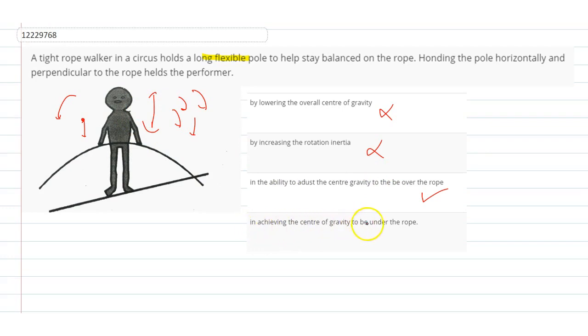So this option is correct, in achieving the center of gravity to be under the rope. Center of gravity under the rope can never happen, so that statement itself is wrong, so we don't need to consider that option.